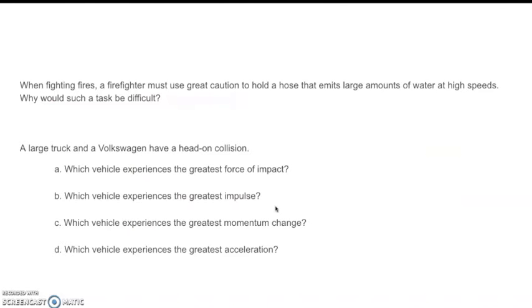So let's think about when fighting fires. A firefighter must use great caution to hold a hose that emits large amounts of water at high speeds. Why would such a task be difficult? Well, if the firefighter is shooting the hose out this way, then the opposite force is going to be going this way. And if the firefighter is not ready for that force, it will send him on his behind. He will go flying back. So that's why you have to be ready for that water flying out because that water with high speed is going to make a lot of momentum that you have to fight against to make sure you don't fall down as the firefighter.